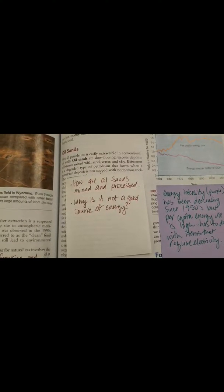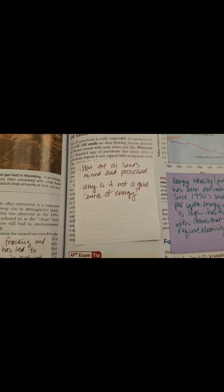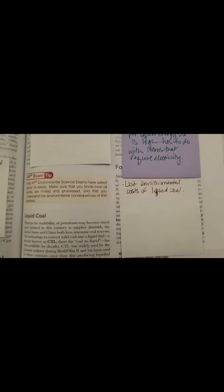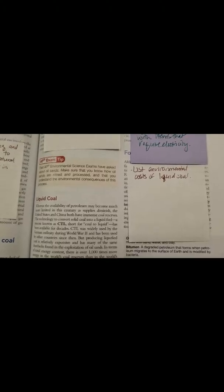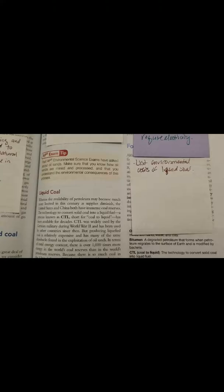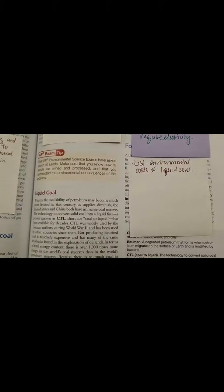Moving up to oil sands, this is something that we don't use that much. It's a type of petroleum trapped in sand. How are they mined and processed? Read underneath the sticky note. Why is it not a good source of energy? Why don't we use that? And then this last thing, liquid coal. Make sure you understand the environmental costs of liquid coal. Why do we not use this very much? And what are the implications to using it?